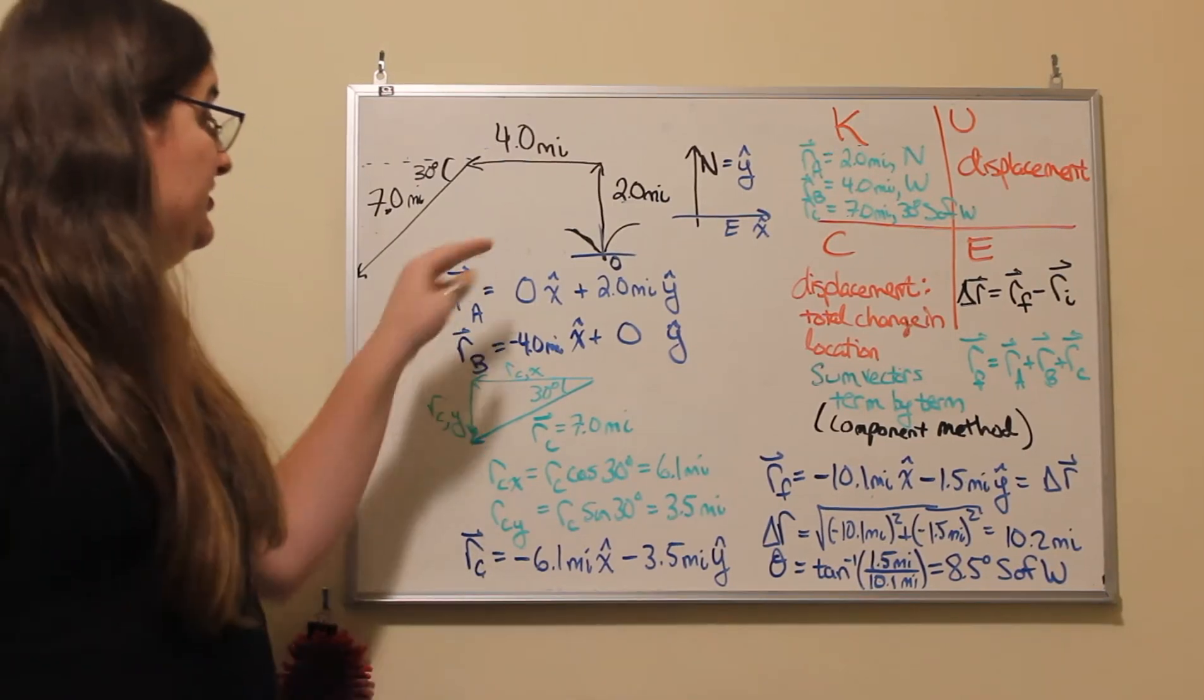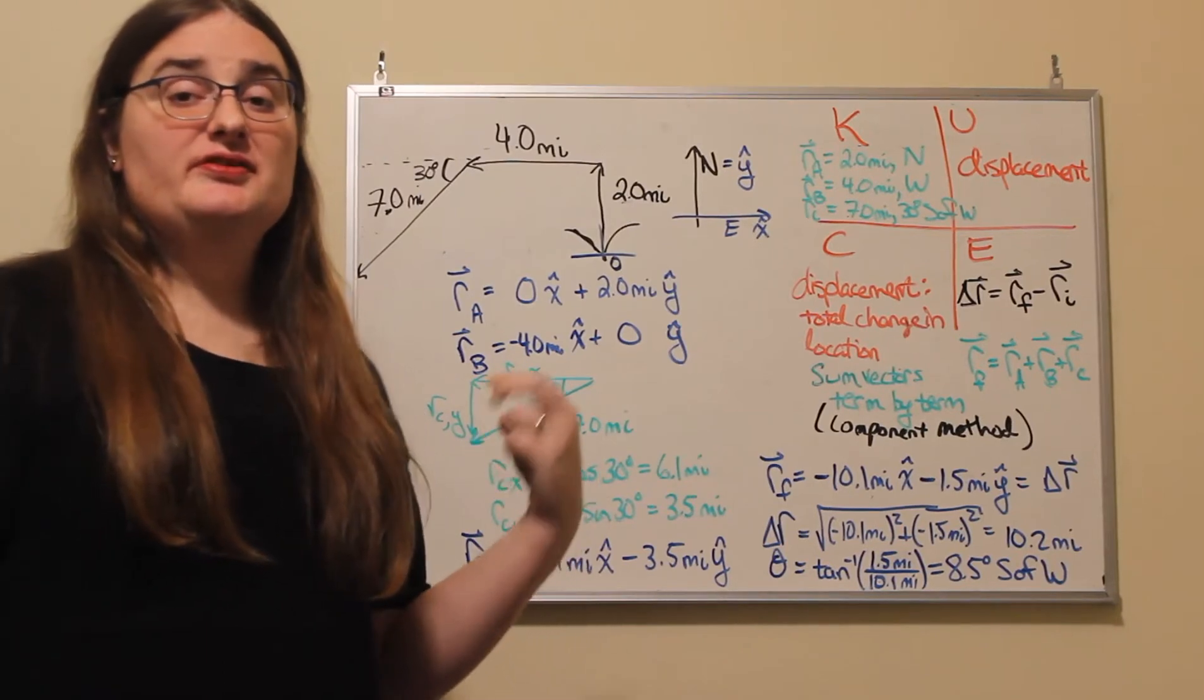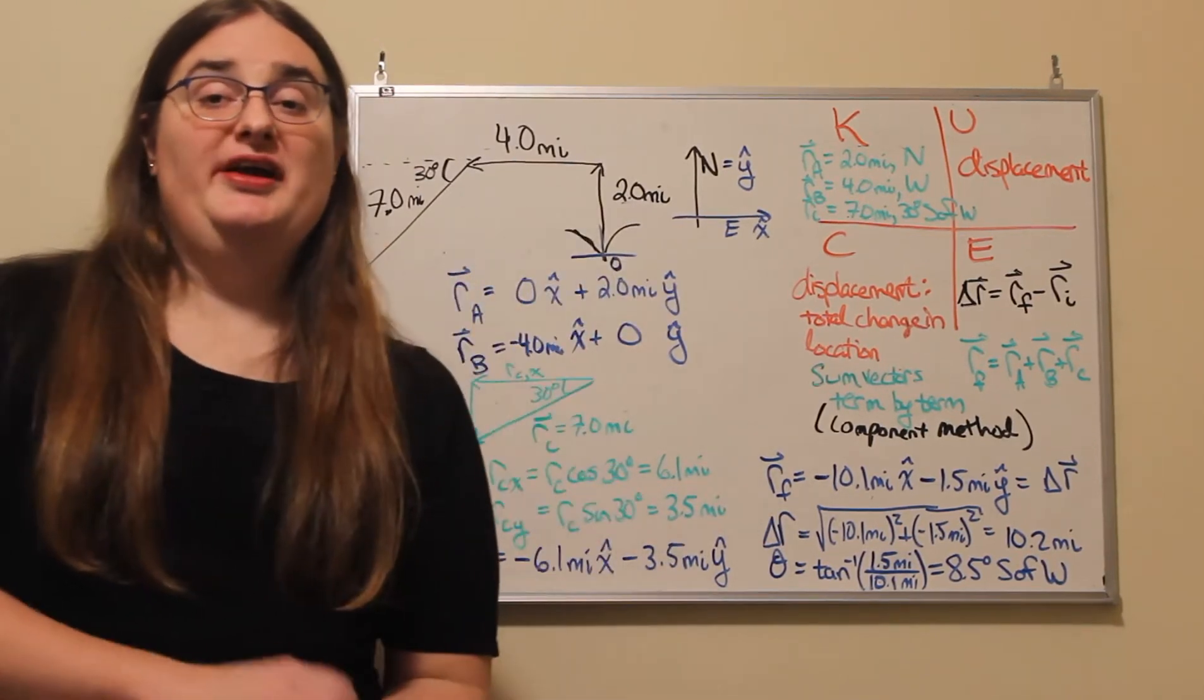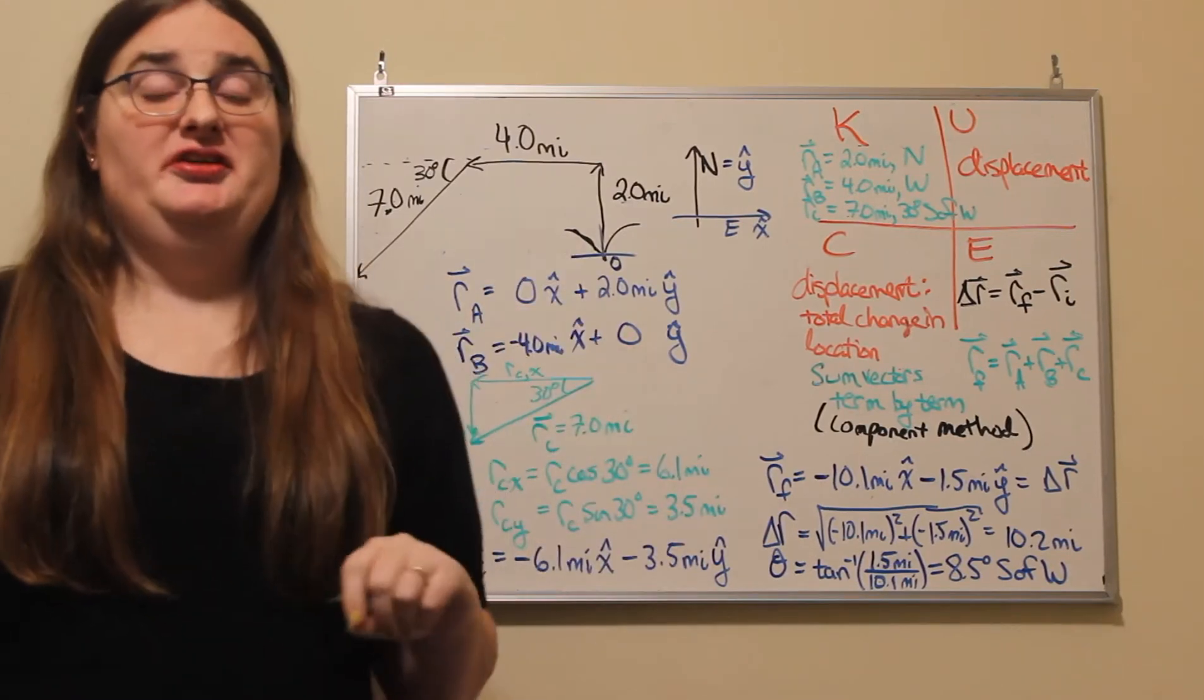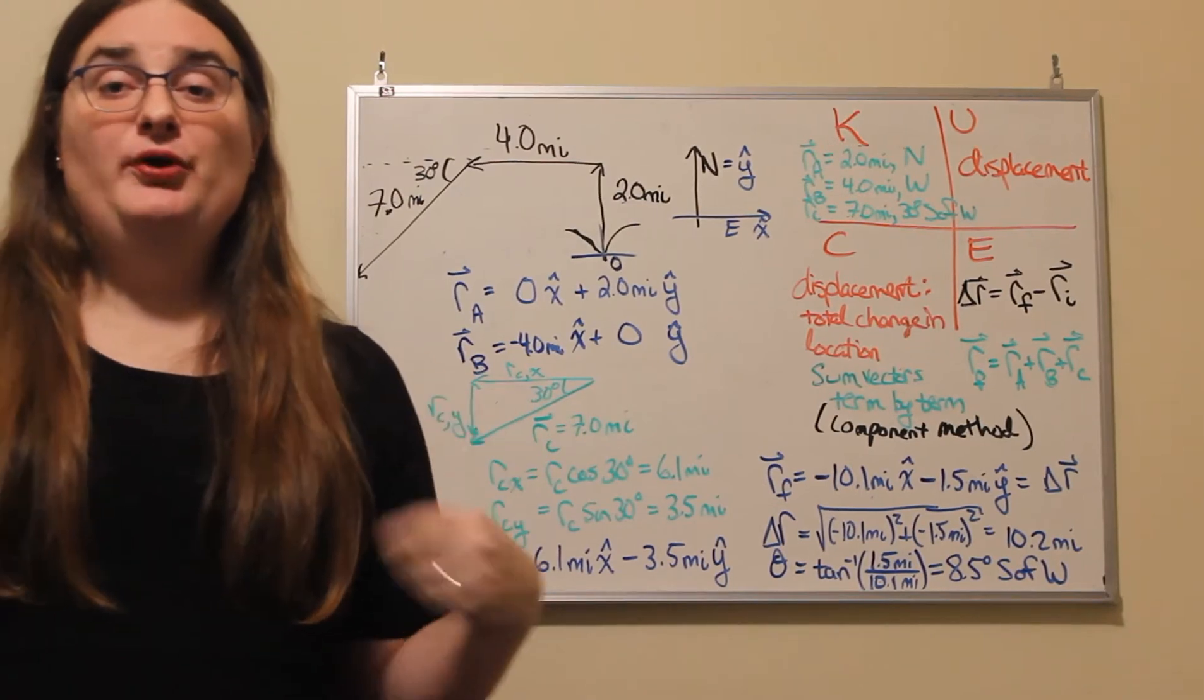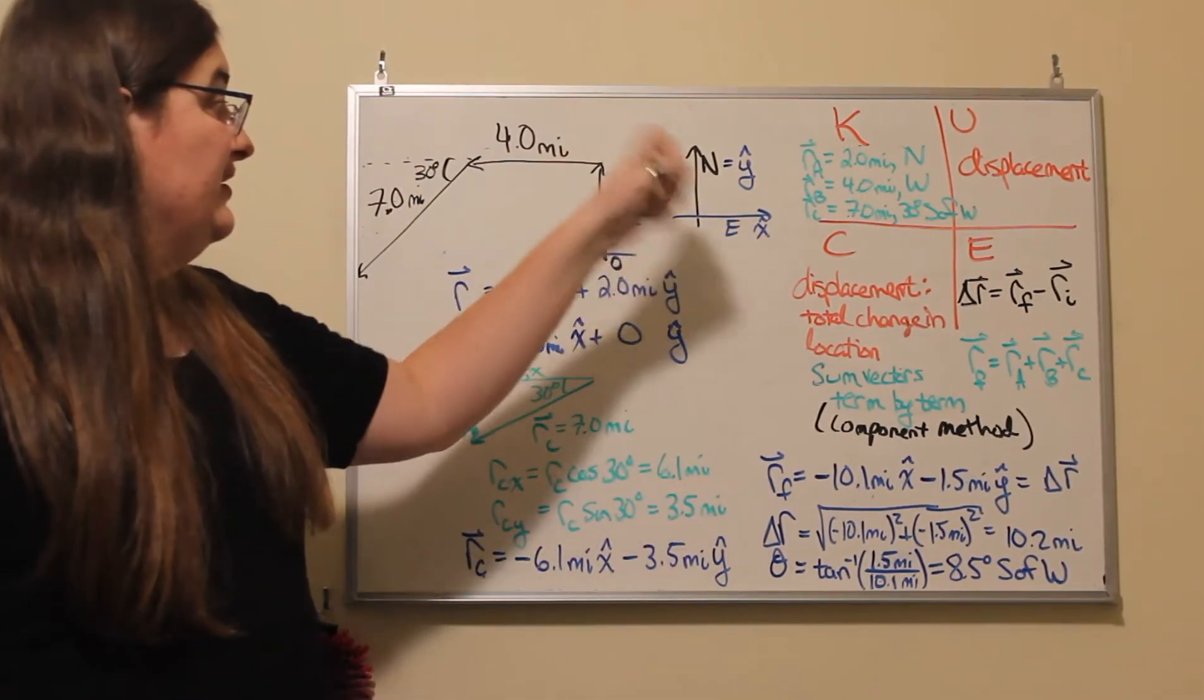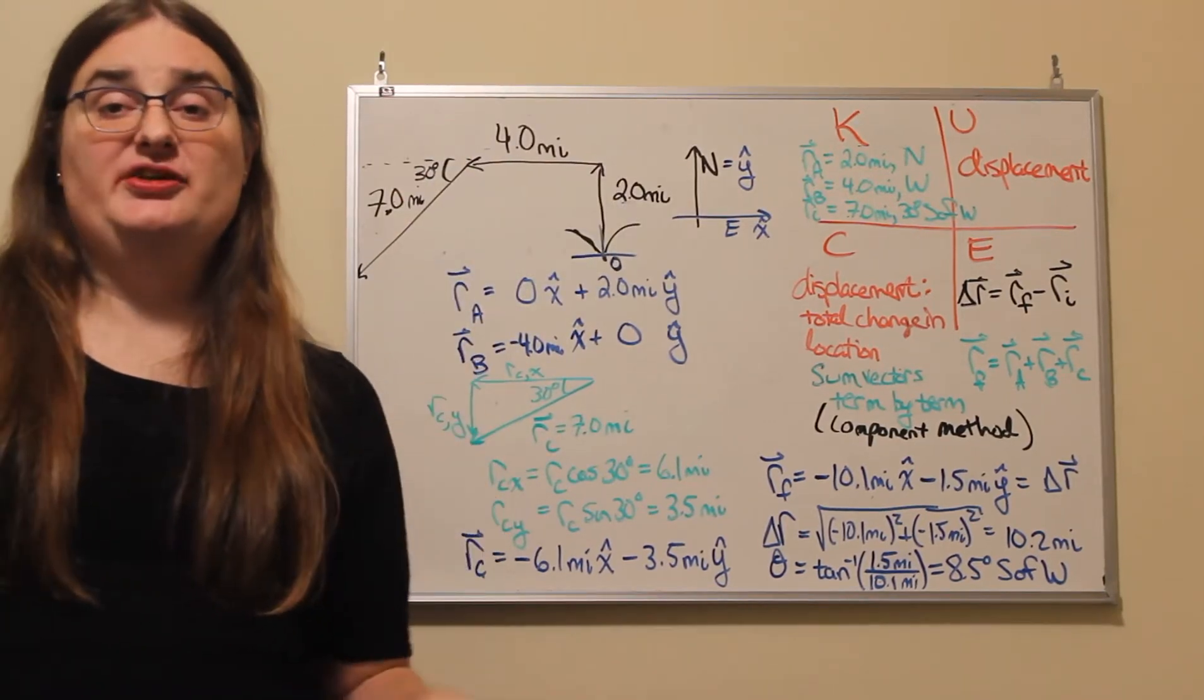Say that we have a bird that flies and makes a series of two stops along the way to its final destination. Say it starts at the origin and then it flies due north for a distance of 2.0 miles. The bird then heads due west a distance of 4.0 miles.